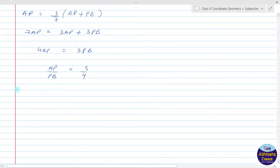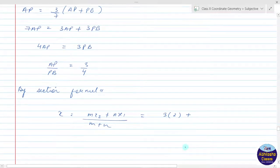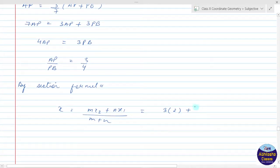By section formula, x = (m·x₂ + n·x₁)/(m + n). So m = 3 and x₂ = 2, giving us 3×2 plus n·x₁.